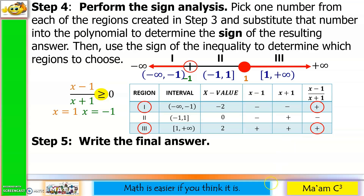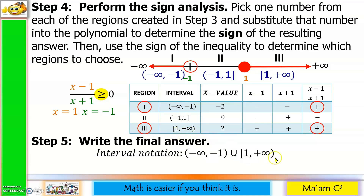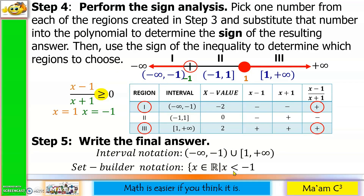Finally, Step 5: Write the final answer. In interval notation: negative infinity to negative 1, union, 1 to positive infinity. In set builder notation: x is an element of real numbers such that x is less than negative 1 — no 'or equal to' since negative 1 is not included — or x is greater than or equal to 1, since 1 is included.